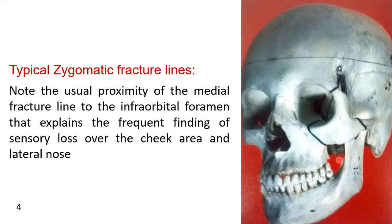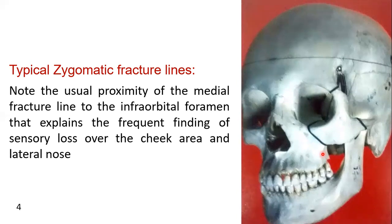The medial aspect of the fracture line is close to the infraorbital foramen, as seen in this area. The fracture line is close to the infraorbital foramen, and as you know, the infraorbital nerve comes out here. So when the fracture of the zygomatic bone occurs, there is a chance that sensory loss occurs over the area supplied by the infraorbital nerve — that is the cheek or the lateral nose.